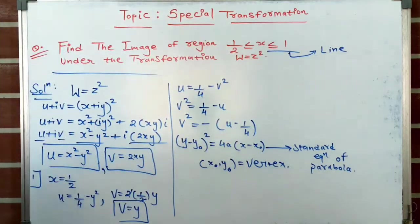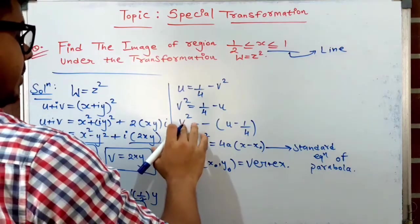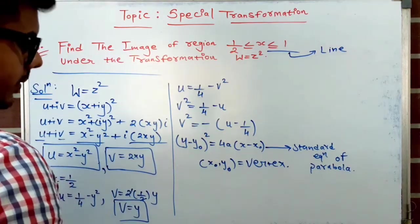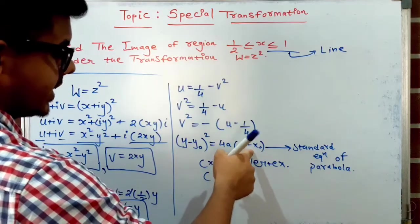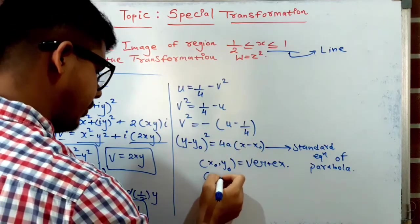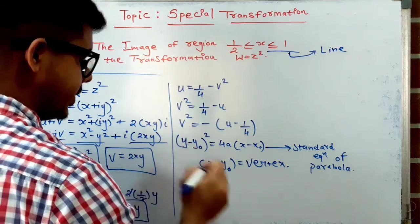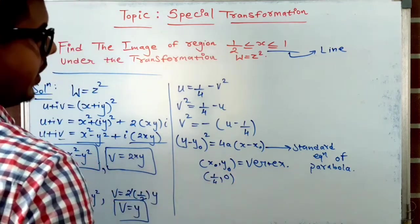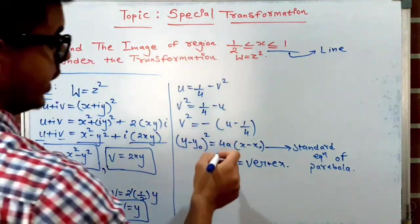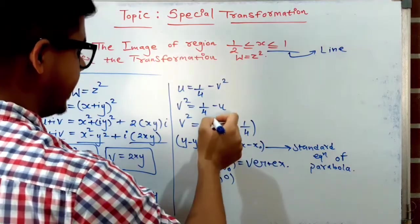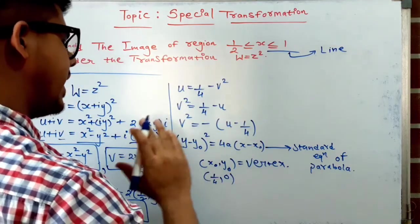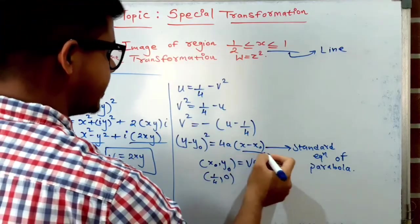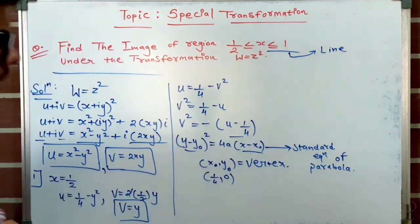Comparing our equation v² = −(u − 1/4) with the standard form: the vertex x₀ = 1/4 and y₀ = 0, so the vertex is (1/4, 0). The coefficient 4a = −1, which is negative, meaning this parabola faces the negative u-axis.